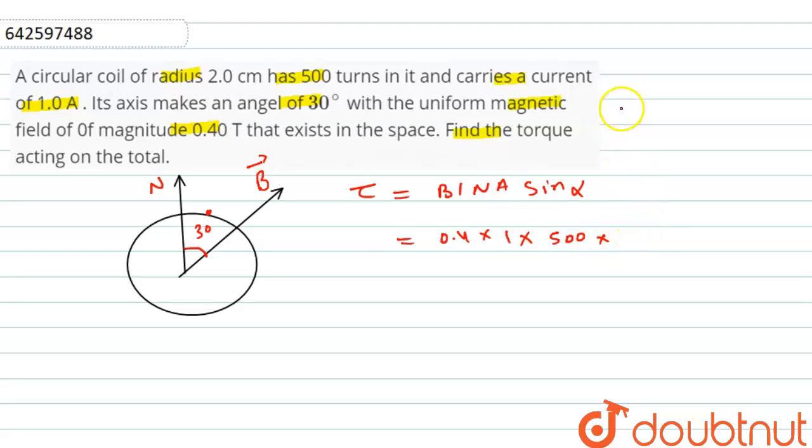The area will be equal to π R², and here π, and we can write R is 2 × 10⁻² to the power 2, and sin 30.